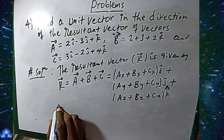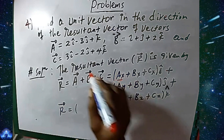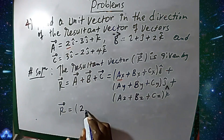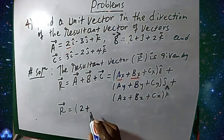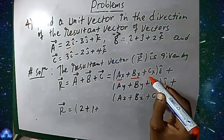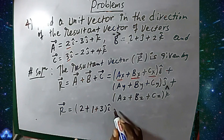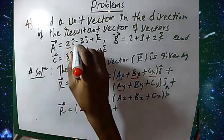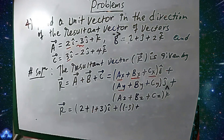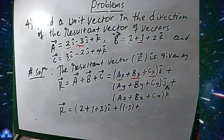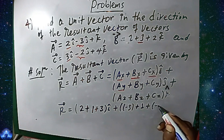So r equals: ax is 2, bx is 1, cx is 3, in the i direction. Plus ay is minus 3, by is 1, cy is minus 2, in the j direction.